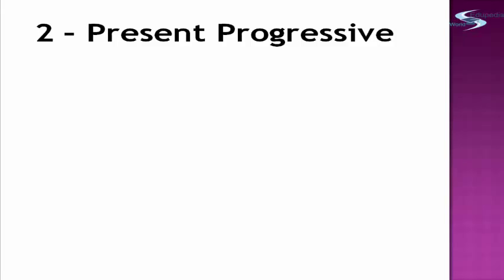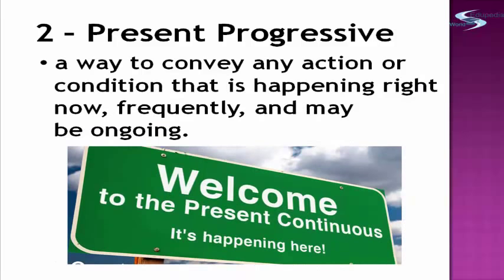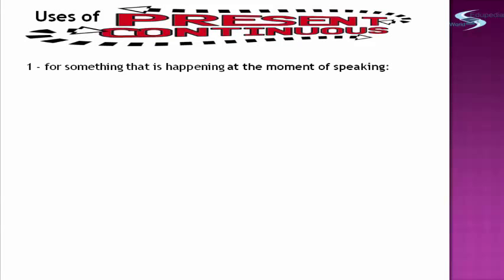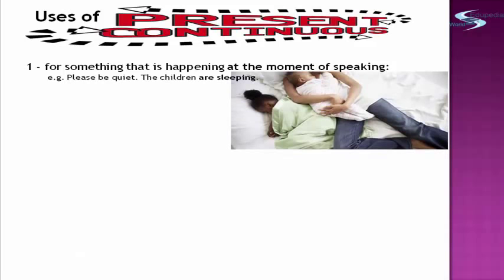The second tense in the progressive or continuous tenses is the present progressive. What is this? It is a way to convey any action or condition that is happening right now, frequently, and maybe ongoing. Uses of present continuous: Number one, for something that is happening at the moment of speaking. Example: 'Please be quiet. The children are sleeping.' 'Are sleeping' is in the present continuous — it is happening at this moment.